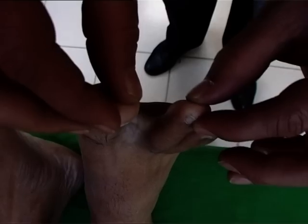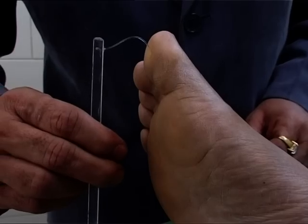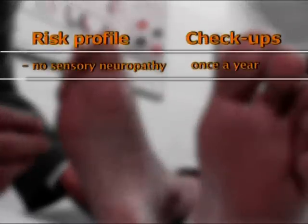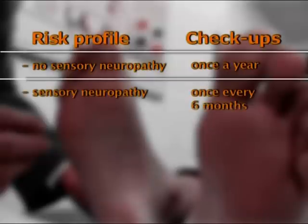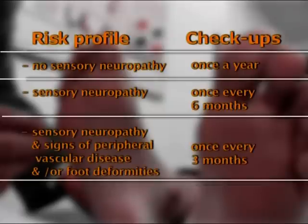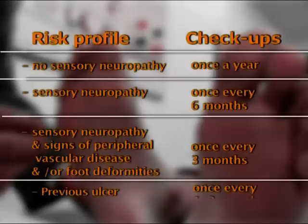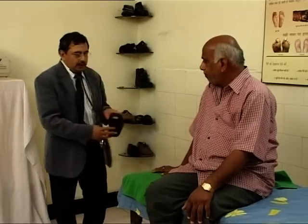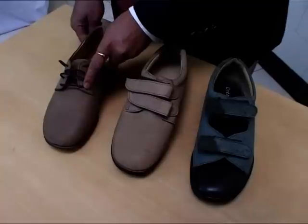After clinical examination, every patient should be categorized according to risk to determine frequency of checkup: no sensory neuropathy — once a year; sensory neuropathy — once every six months; sensory neuropathy with signs of peripheral vascular disease and/or foot deformities — once every three months; previous ulcer — once every one to three months.